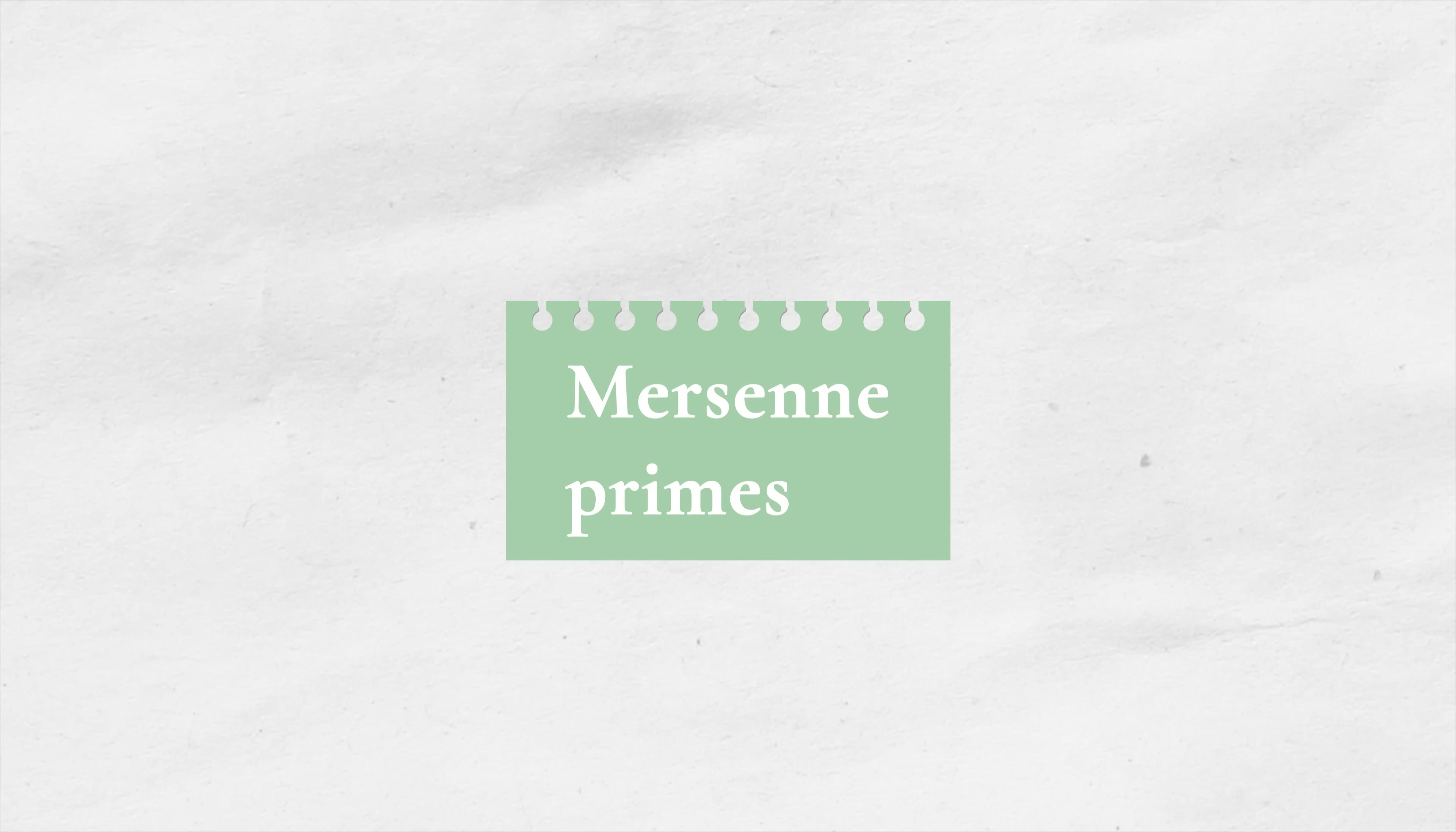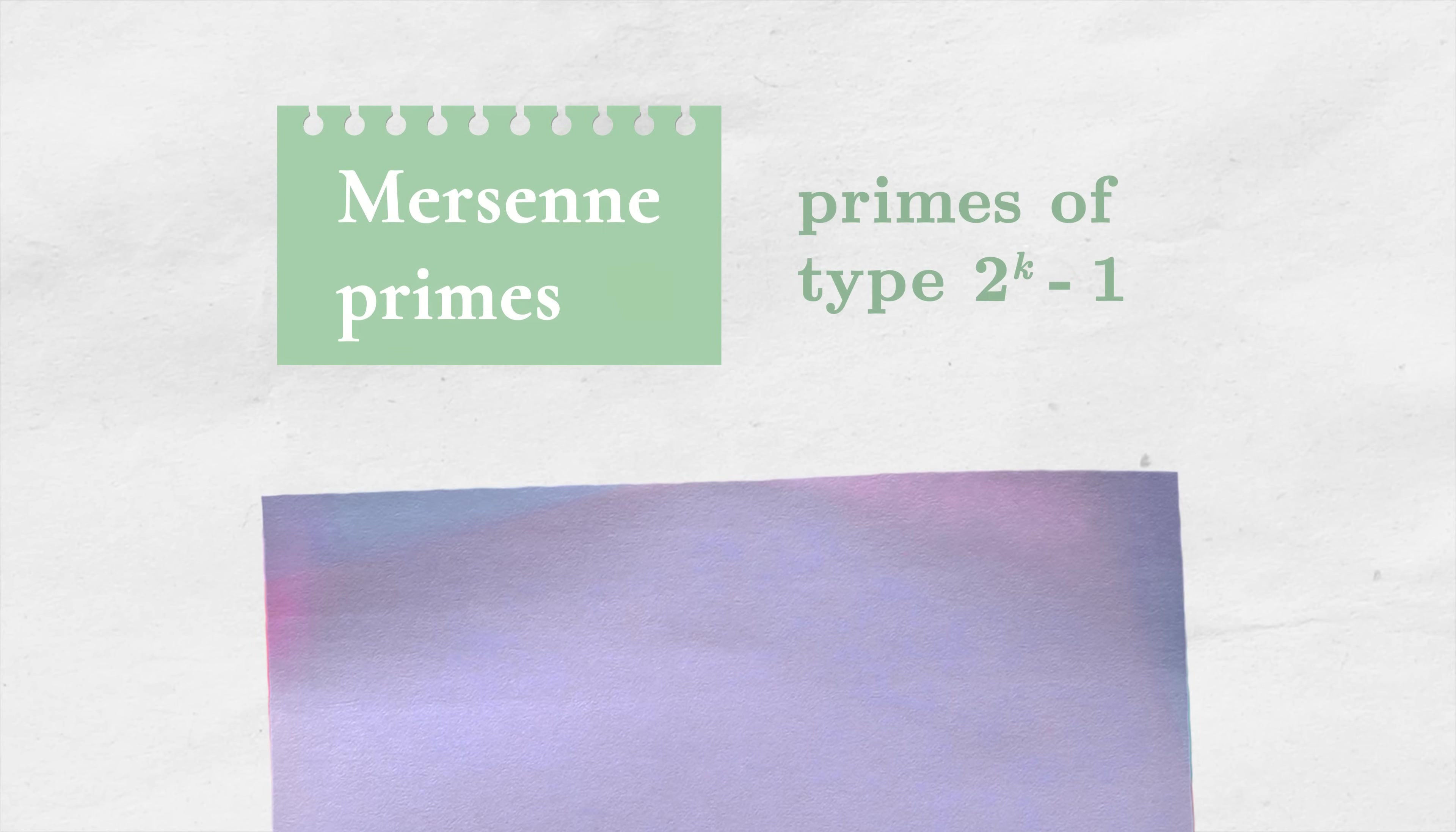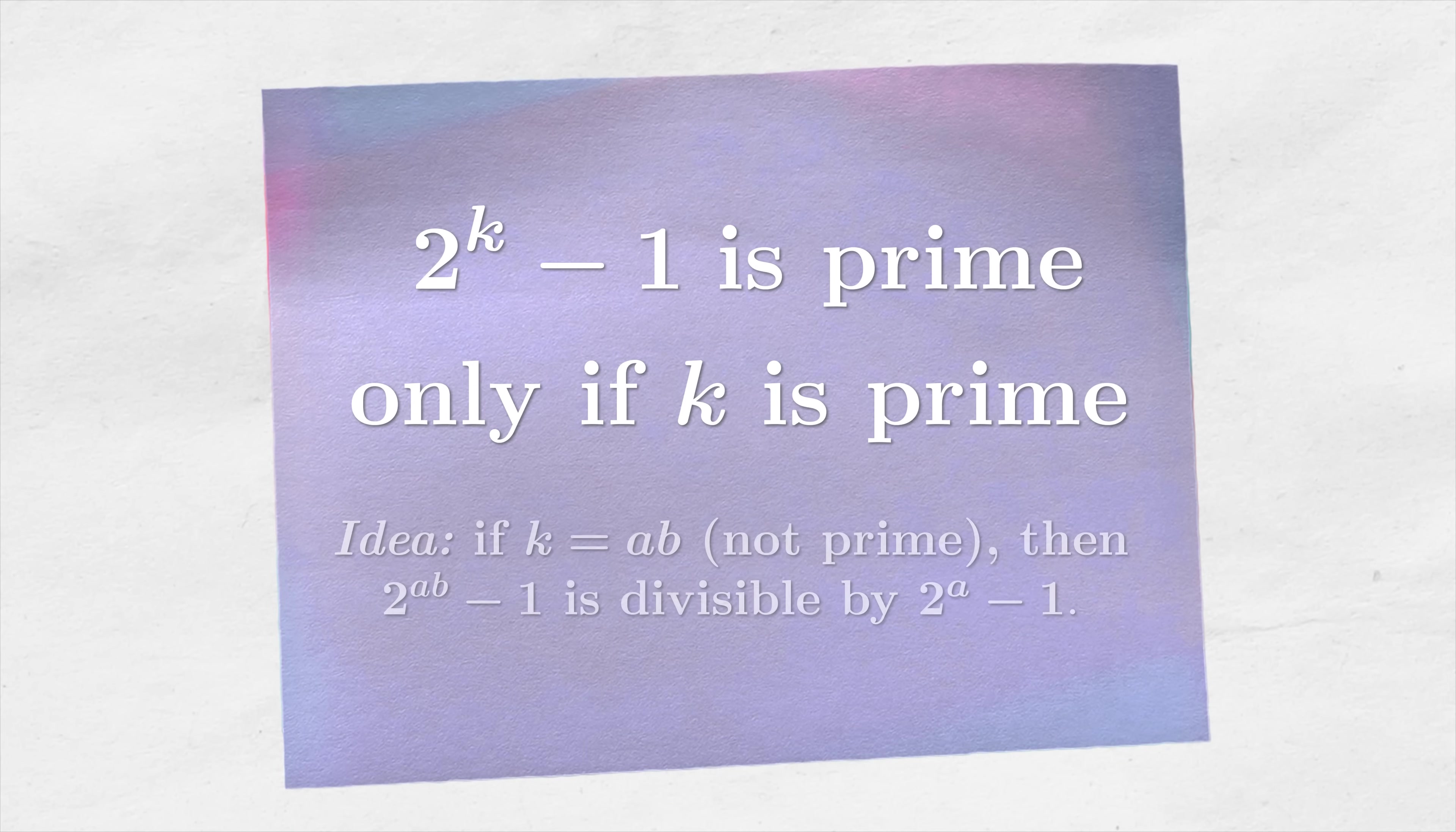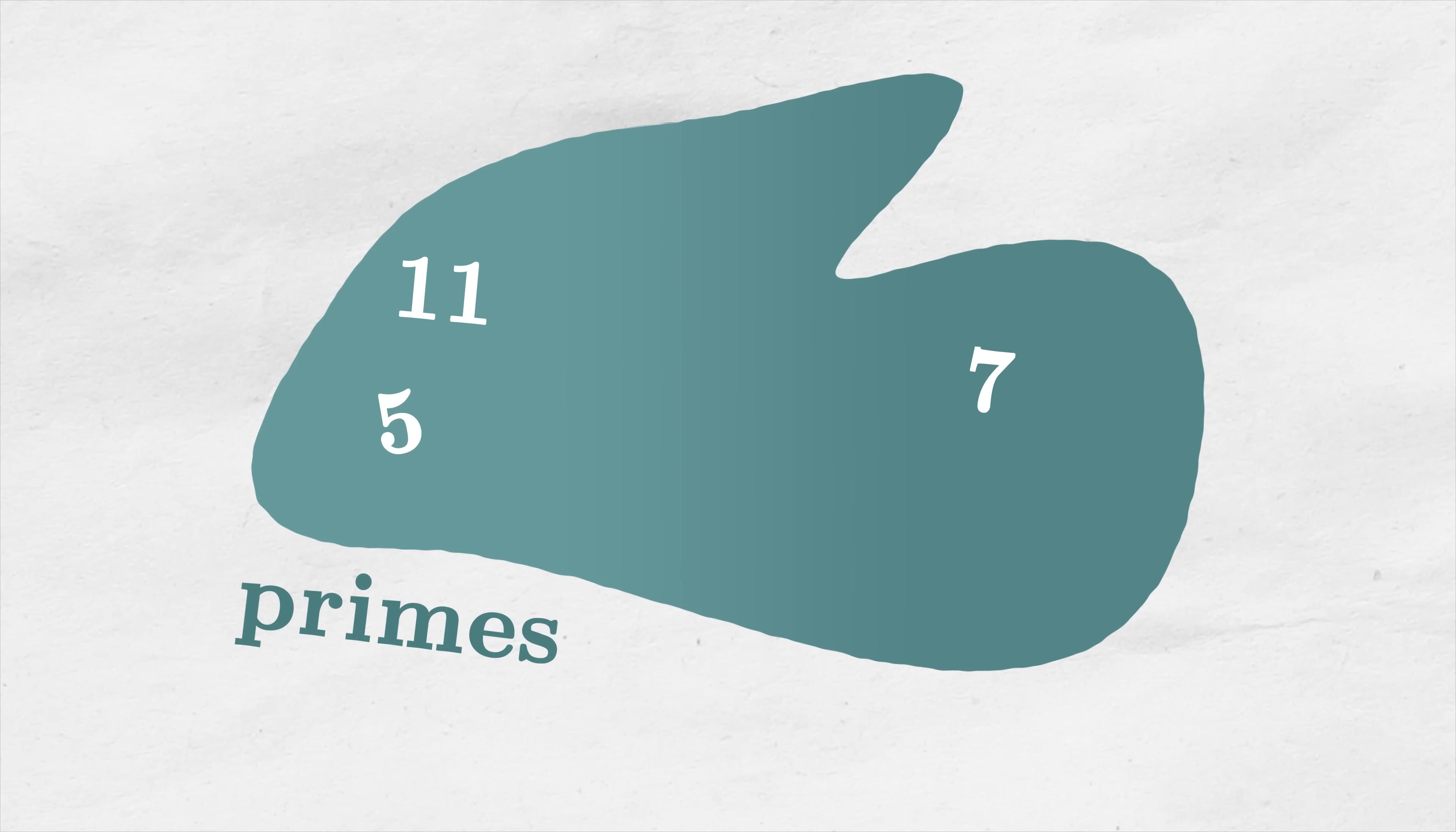Let's focus on Mersenne primes. One can easily prove that 2 to the power of k minus 1 is prime only if k itself is a prime number. Also, each prime larger than 3 falls into one of two categories, 6m plus 1 or 6m plus 5, so we shall concentrate on those two cases.